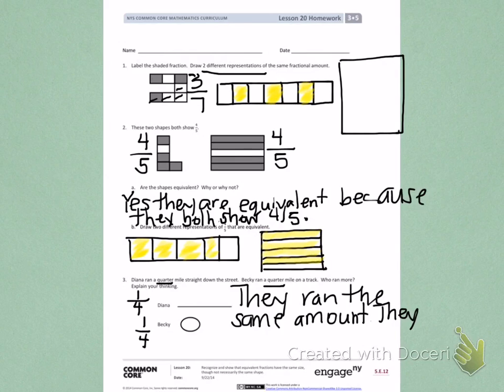The way they ran was different because Diana ran in a straight line and Becky ran in a circle. But they both ran the same amount. So, they ran equivalent fractions.